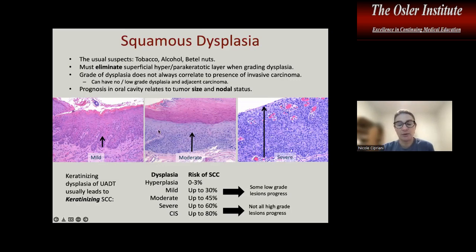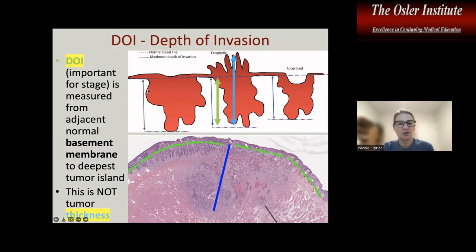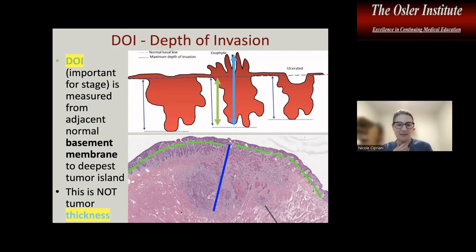In the oral cavity, we grade dysplasia in a three-part fashion: mild, moderate, and severe. Prognosis relates to tumor size, depth of invasion, and lymph node status. One important concept is measuring depth of invasion (DOI), which is important for tumor staging and predicting regional lymph node metastases. A DOI of three millimeters or more in the tongue is predictive of increased risk for lymph node metastases.